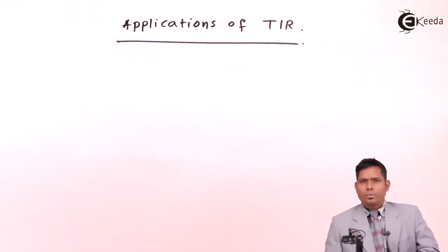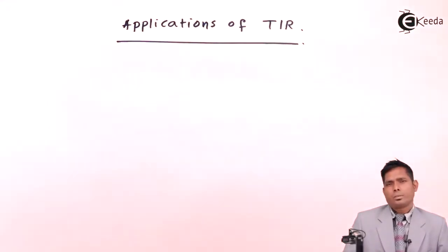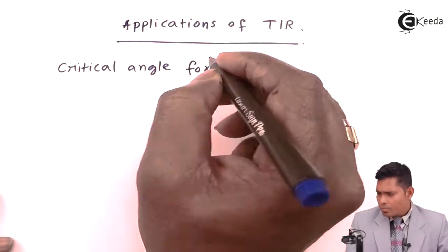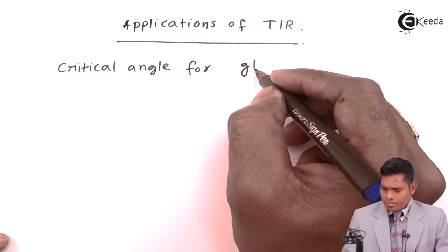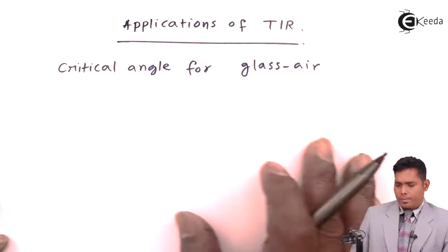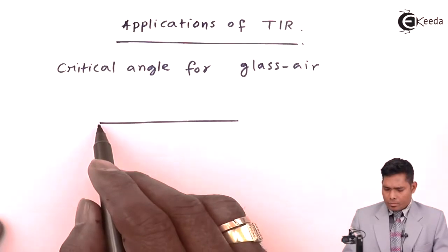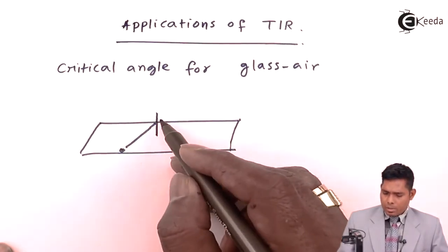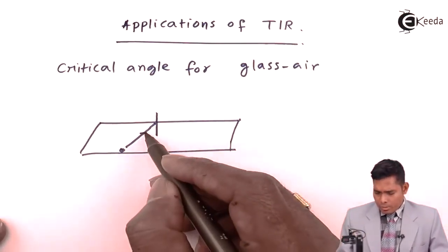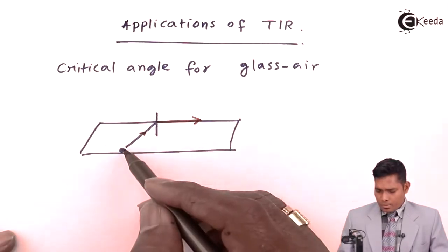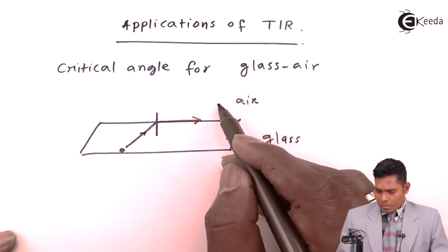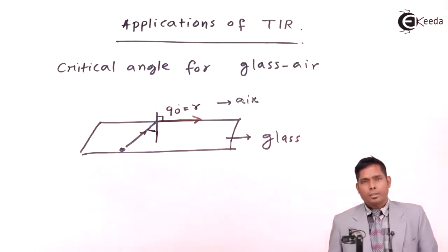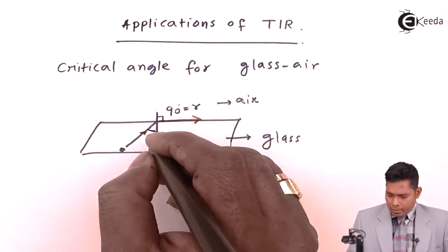For the critical angle of a glass-air surface, suppose we have a glass plate here and light travels from this glass plate and moves outward. If the ray grazes the surface — glass on the inside, air on the outside — this angle is 90 degrees. The angle of incidence for which the refracted angle of refraction is 90 degrees is called the critical angle.